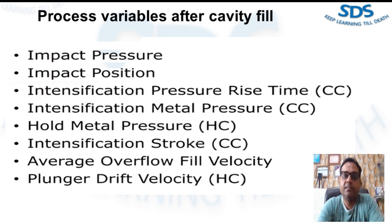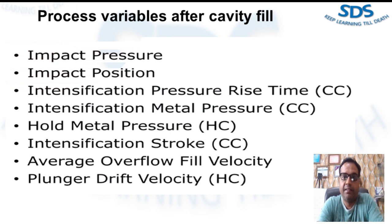Plunger drift velocity is a variable found only in hot chamber machines. Plunger drift is the plunger over-travel after impact. The majority of movement during plunger drift is leakage of metal past the rings in the hot chamber system. The best way to measure this is by rate of movement or velocity. Maximum standards for plunger drift velocity should be set by plant or by job. If the plunger drift velocity standard is exceeded, the machine is no longer maintaining adequate metal pressure as the casting is freezing, and the rings, plunger, or gooseneck may need to be changed.